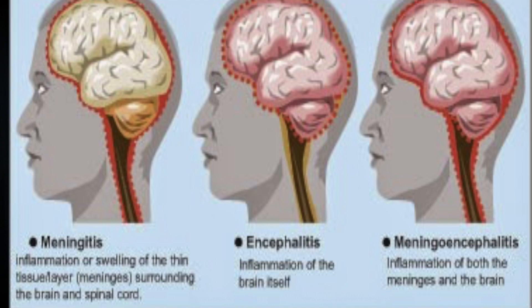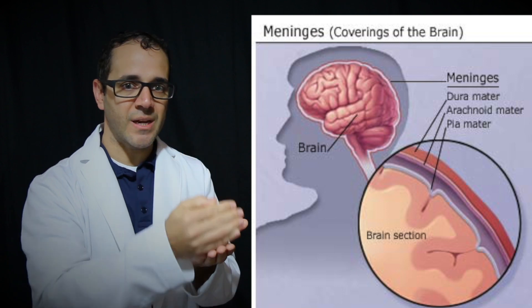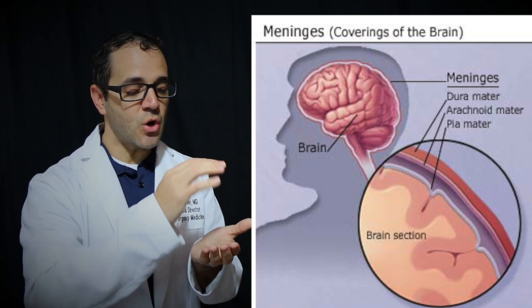You've heard about meningitis many times. It's quite a common brain infection that usually involves the meninges. The meninges is the surface that covers the brain, so it's actually an infection of the surface or that layer of tissue above the brain.